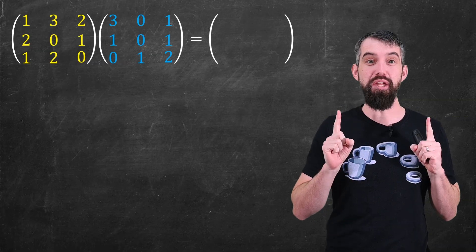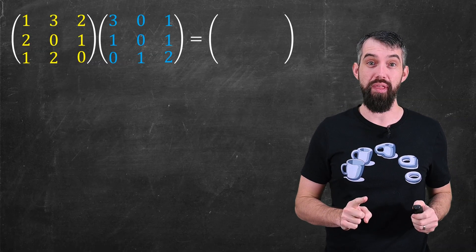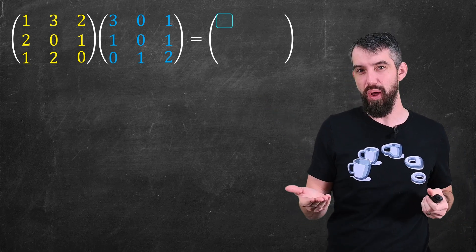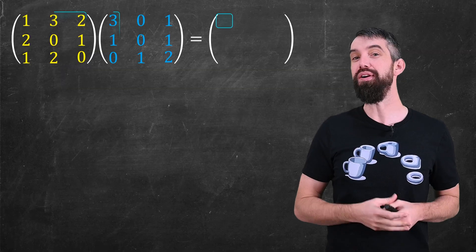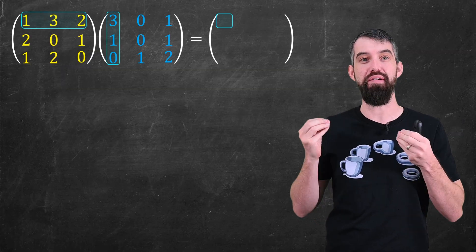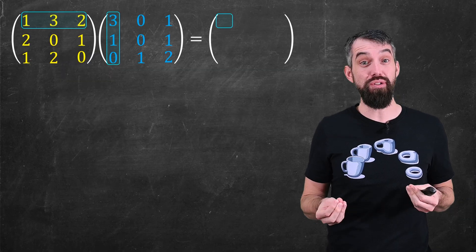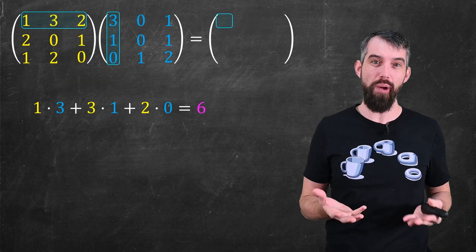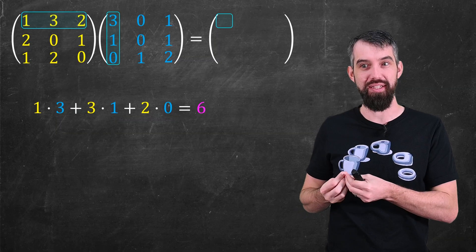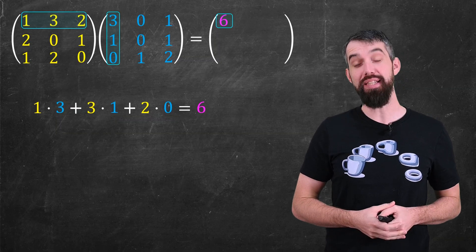Let's briefly review the standard algorithm. If I want to multiply these matrices and look at the entry in the first row in the first column, then I do this weird multiplication of the first row of the first matrix and the first column of the second. These two vectors are multiplied together by the dot product, which multiplies the first two components, adds it to the second two components, and adds it to the third components. This gives the value of six.